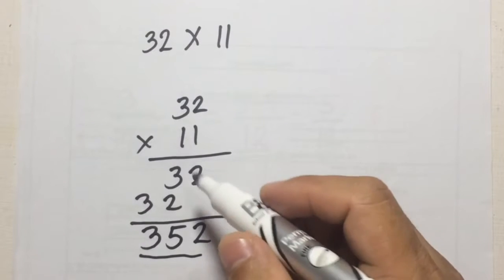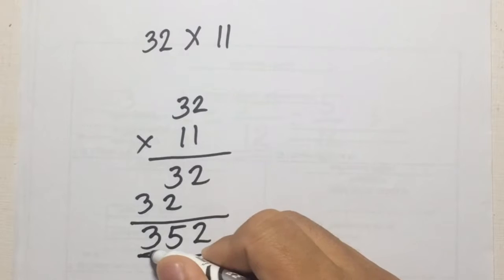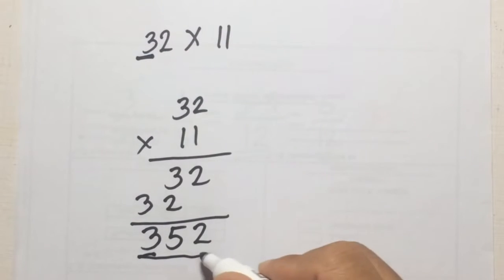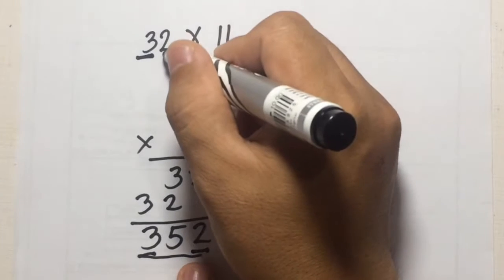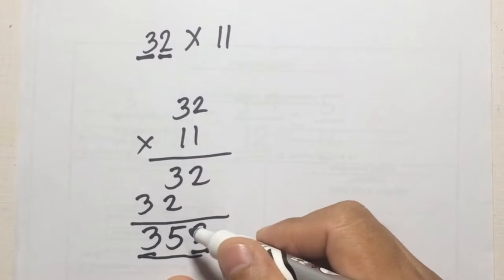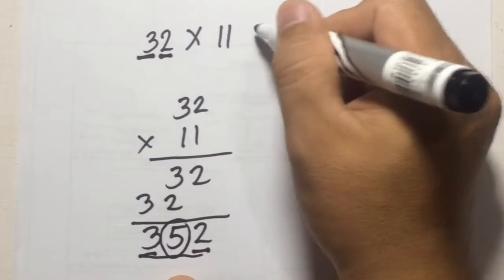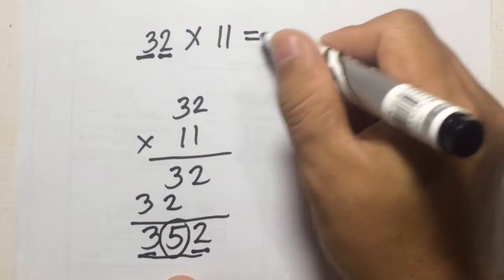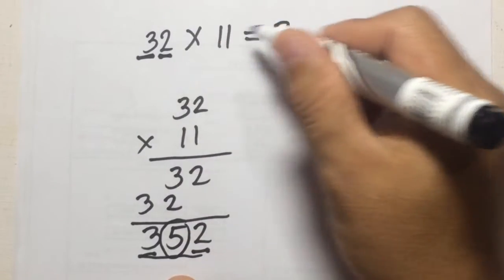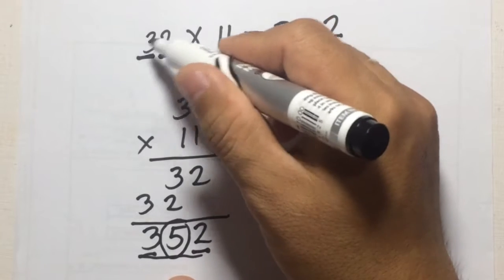If we're going to look at the answer and find a shortcut: the first term of the answer is 3, which is just the first digit of our number. The last digit is 2, which is the second digit of the number. Then the middle term is just the sum of the two digits — so 3 plus 2 equals 5. For the shortcut method: the first digit of the answer is the first digit of the number, the last digit is the second digit of the number, and the middle digit is the sum of the two.